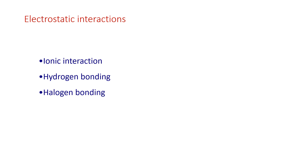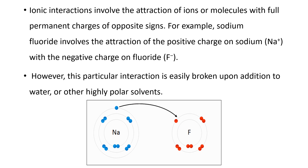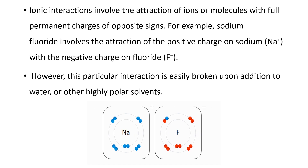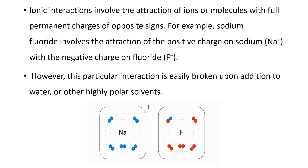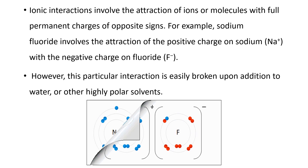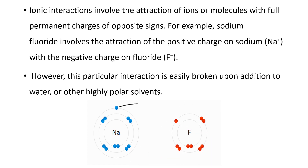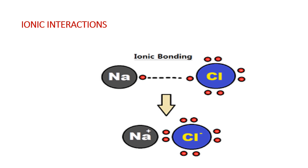Firstly, electrostatic interaction. This is again classified into three types: ionic interaction, hydrogen bonding, and halogen bonding. Ionic interactions involve the attraction of ions or molecules with full permanent charges of opposite signs. For example, sodium fluoride involves the attraction of the positive charge on sodium with the negative charge on fluoride. However, this particular interaction is easily broken upon addition to water or other highly polar solvents. Formation of sodium chloride is again an example for ionic interaction.